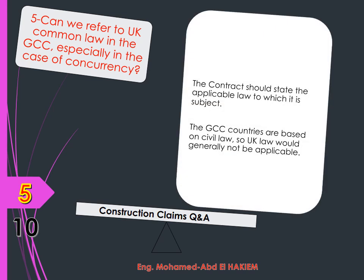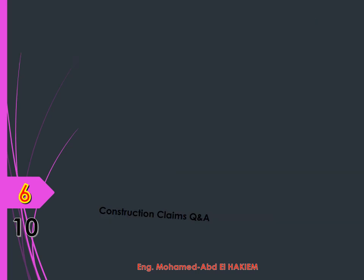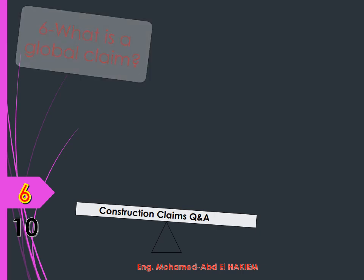Question 5: Can we refer to UK common law in the GCC, especially in the case of concurrency? Answer: The contract should state the applicable law to which it is subject. The GCC countries are based on civil law, so UK law would generally not be applicable. Having said that, case law may sometimes be applied across legal jurisdictions, especially when it deals with technical rather than legal principles. A good source of reference is the Society of Construction Law's Delay and Disruption Protocol, which deals with concurrent delay.